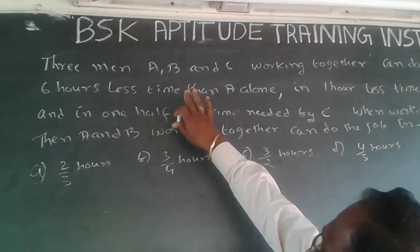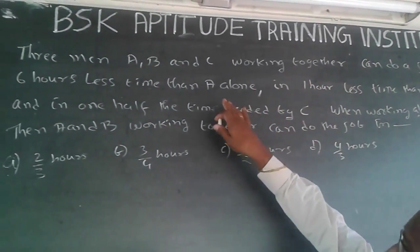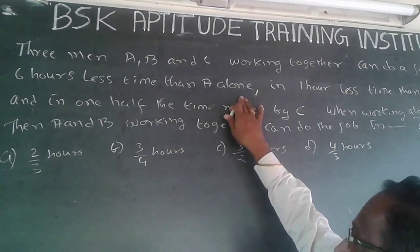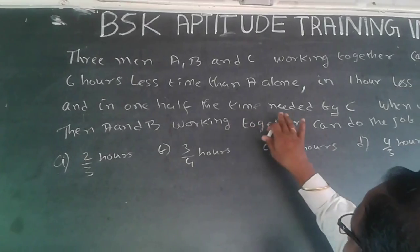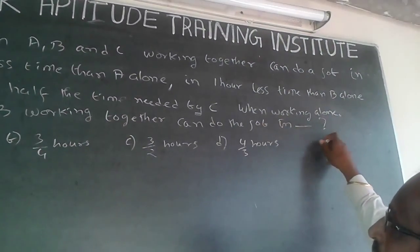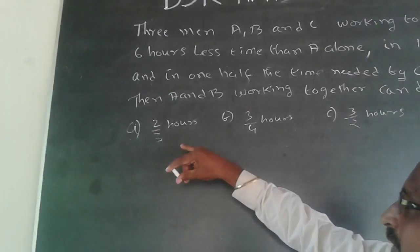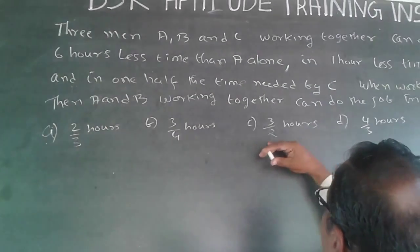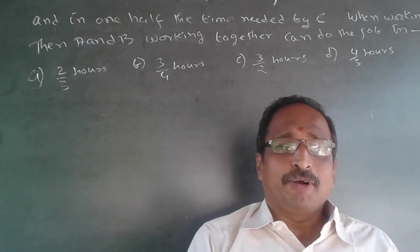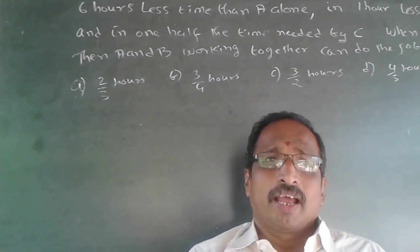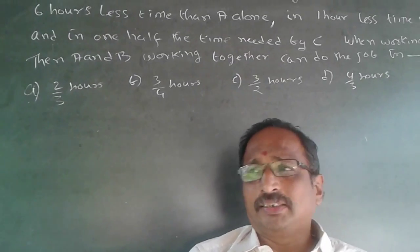The question is: three men A, B, and C working together can do a job in six hours less time than A alone, in one hour less time than B alone, and in one half the time needed by C alone. This is a time and work problem that has been asked in SSC, that is Service Selection Commission, question paper very recently.